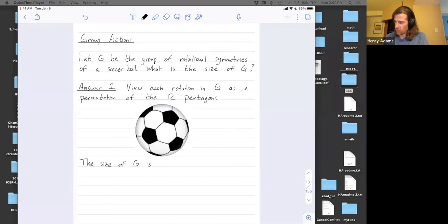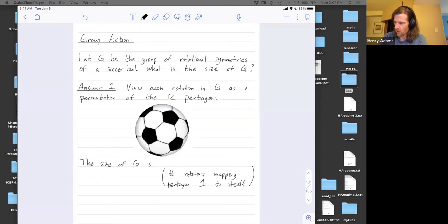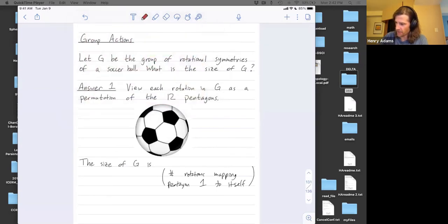So the size of this group is, pick your favorite pentagon and just how many ways can you map it to itself? So how many rotations are there that map pentagon one to itself? So pick any pentagon, call it your favorite pentagon, pentagon one.